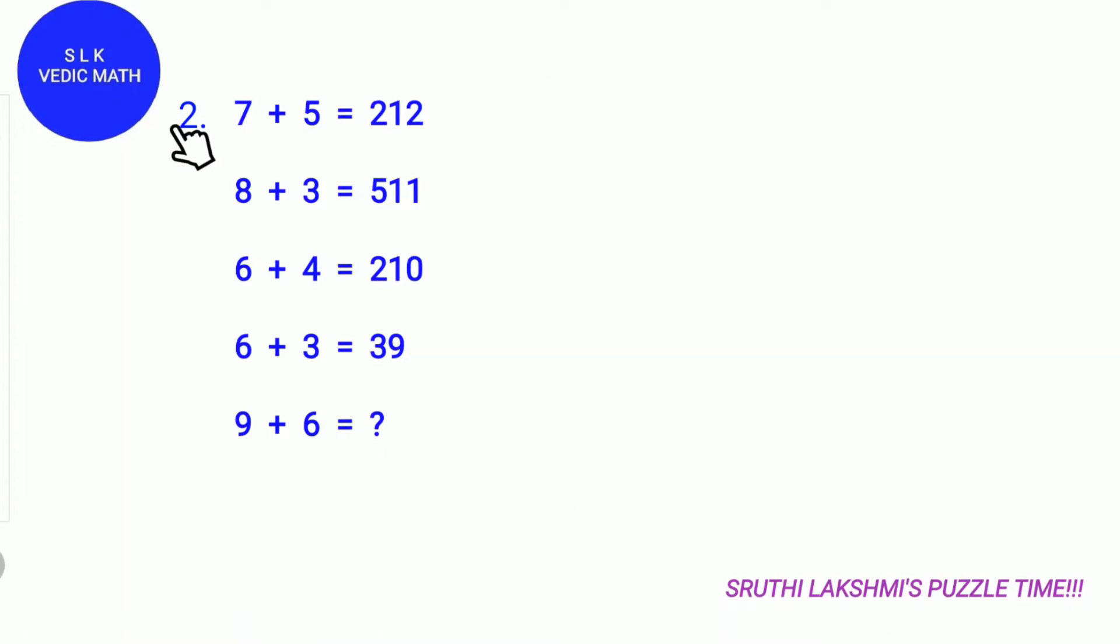Let's see. Puzzle number 2. 7 plus 5 is 212.